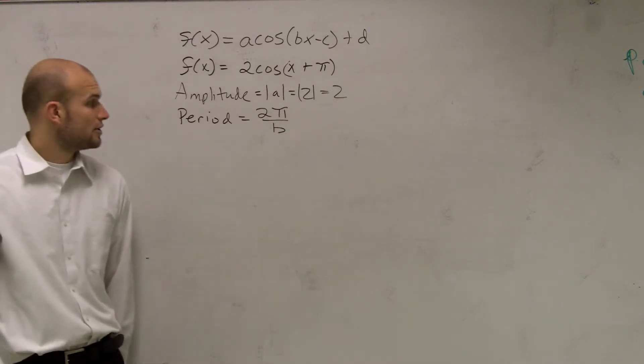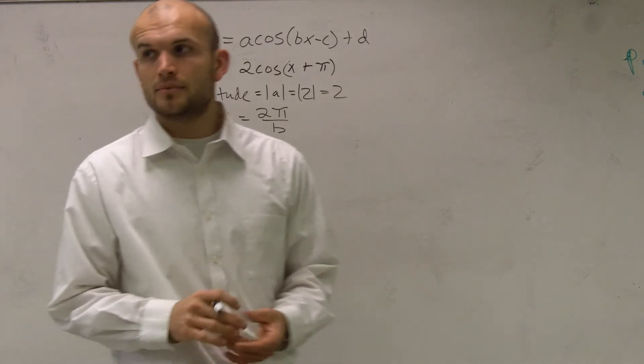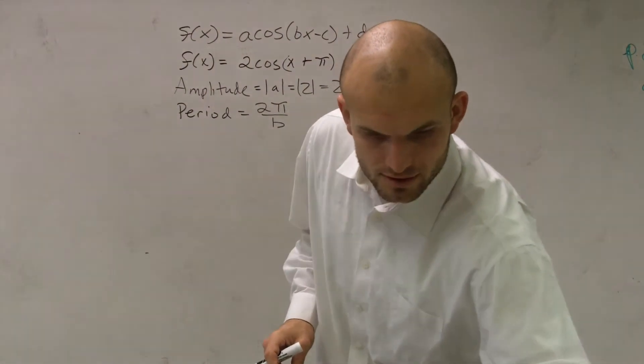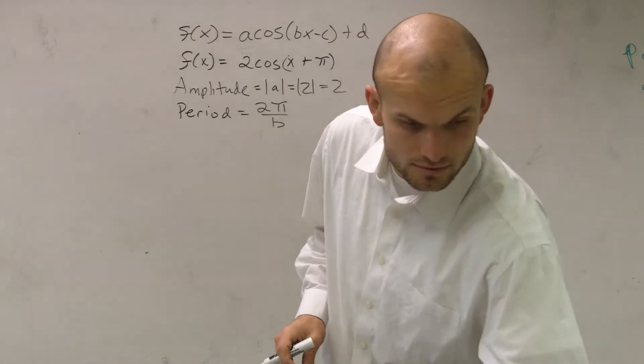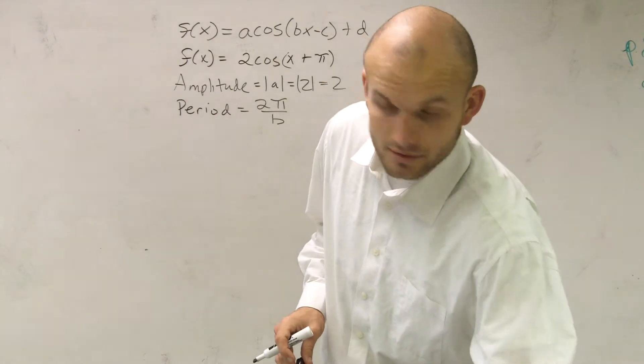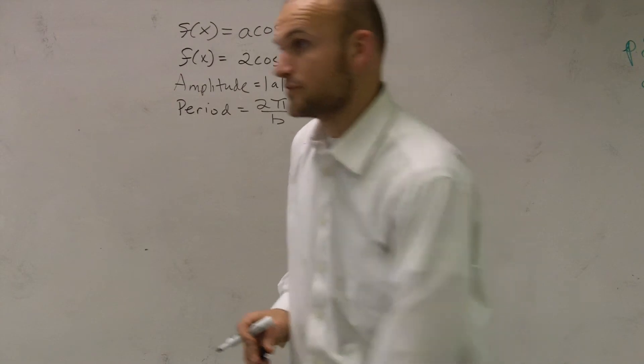If you remember, your period is going to be 2π over B. Guys, before you leave, take note that your homework is 35 through 44.